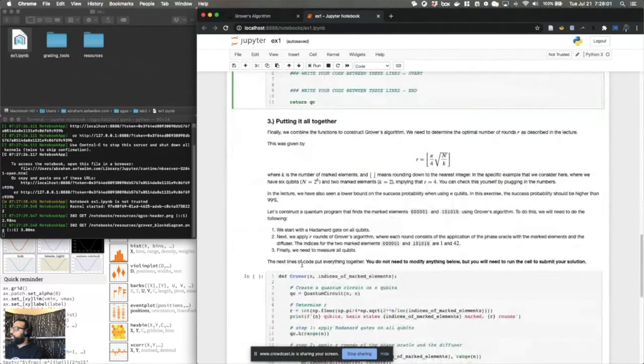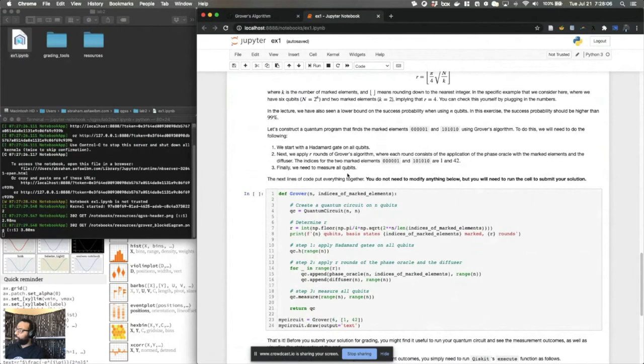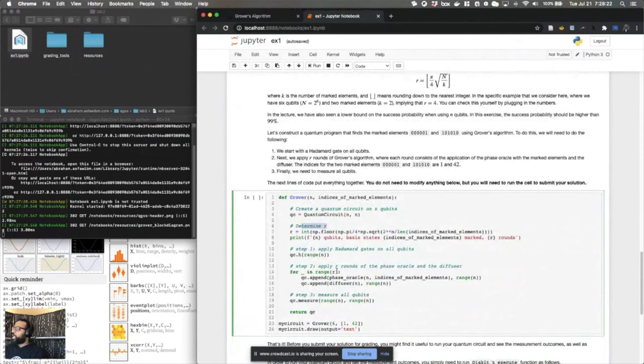So the Grover algorithm has several pieces. You're going to first create a quantum circuit with N qubits. You're going to determine the number of rounds of Grover's algorithm. You might remember from your lecture that the number of rounds is determined according to this expression that we've listed up here for you.